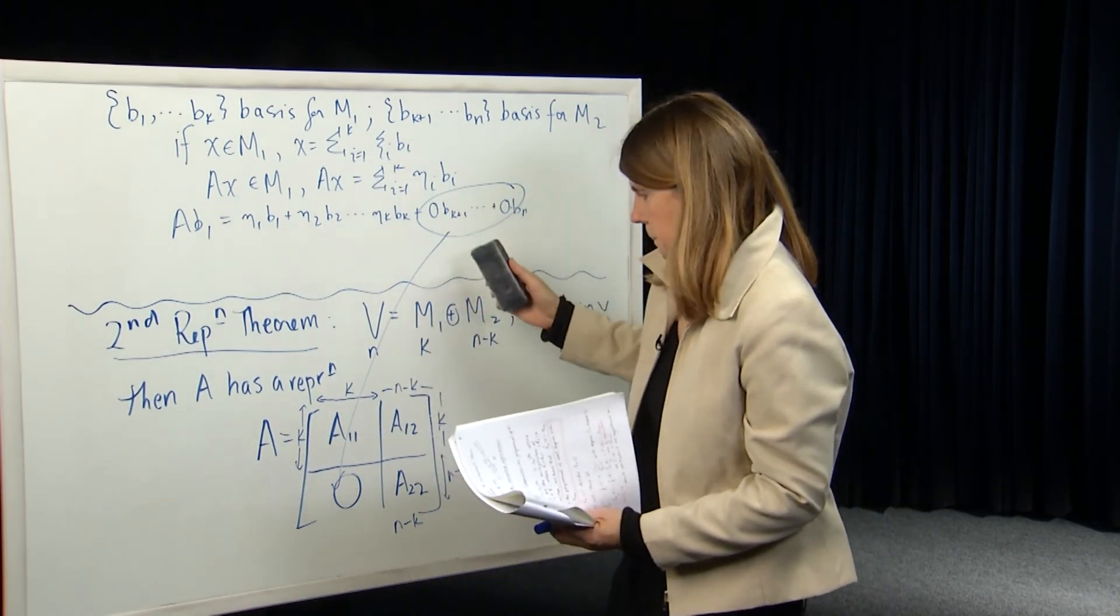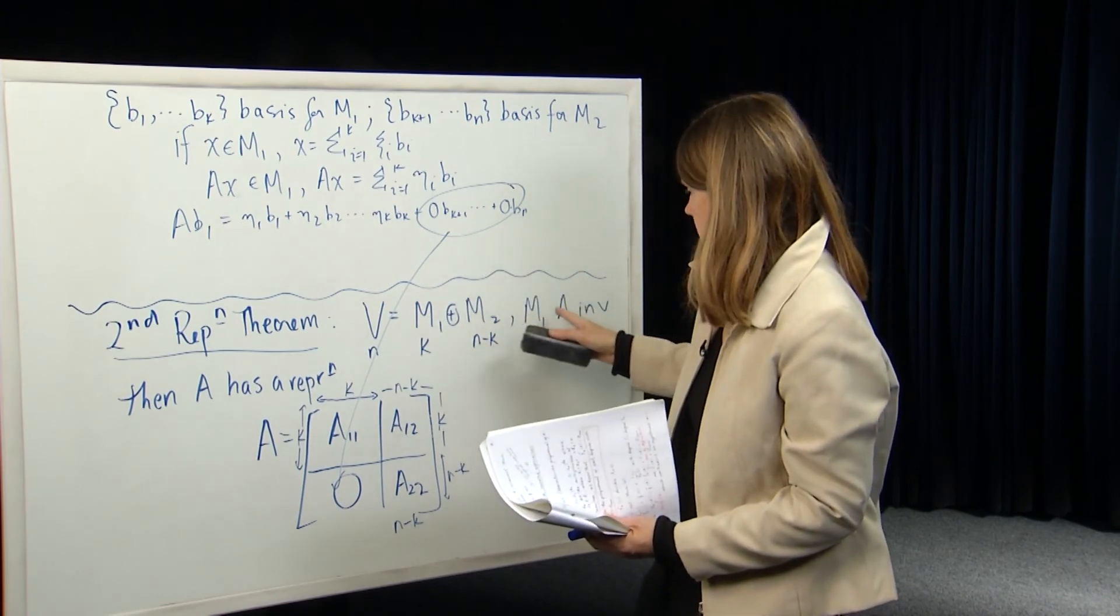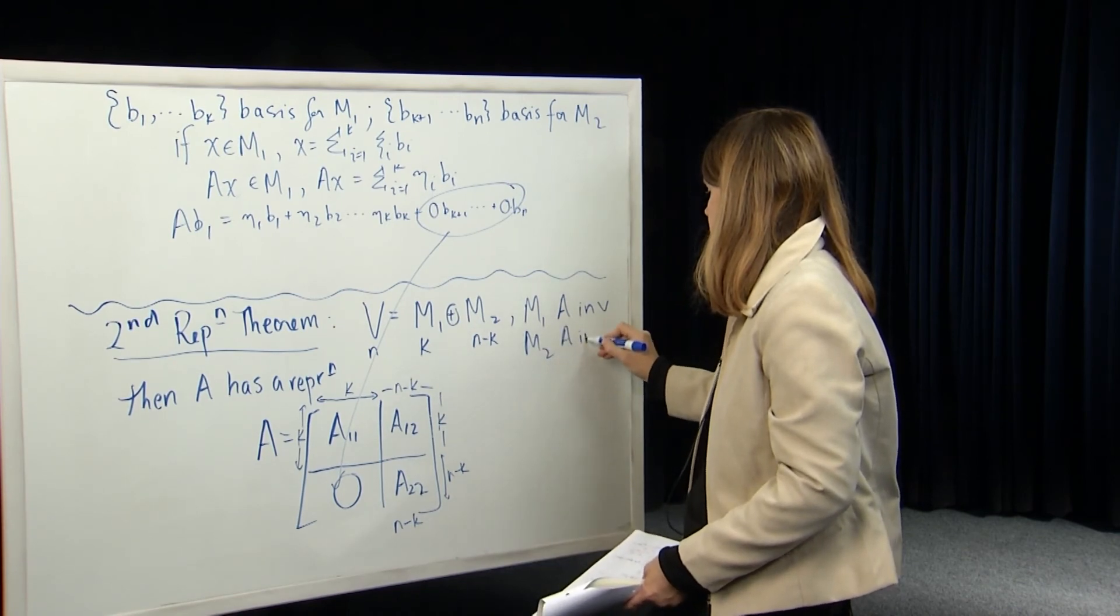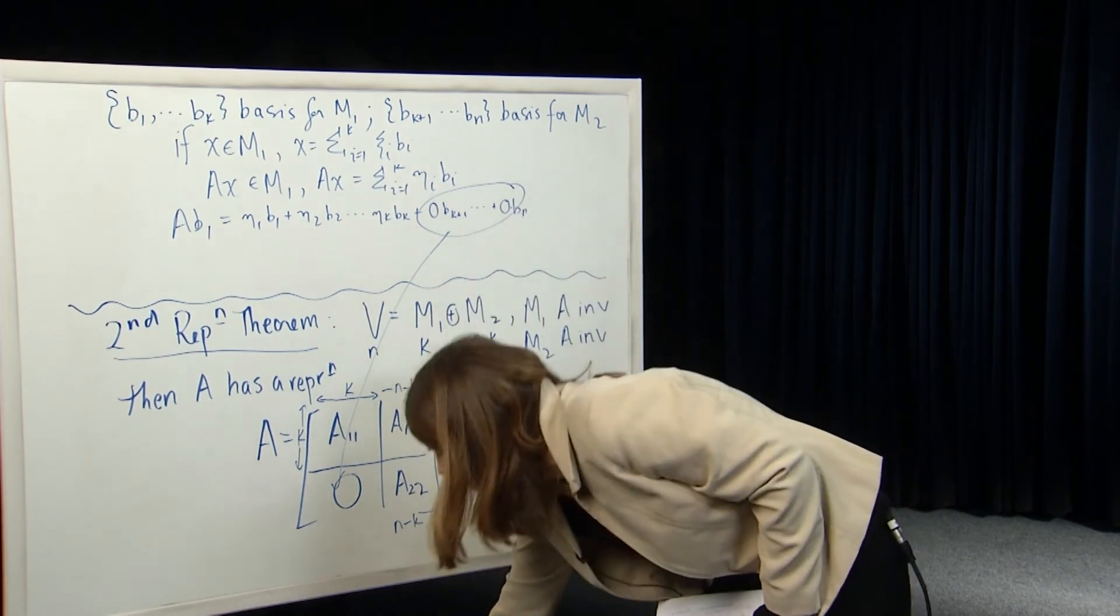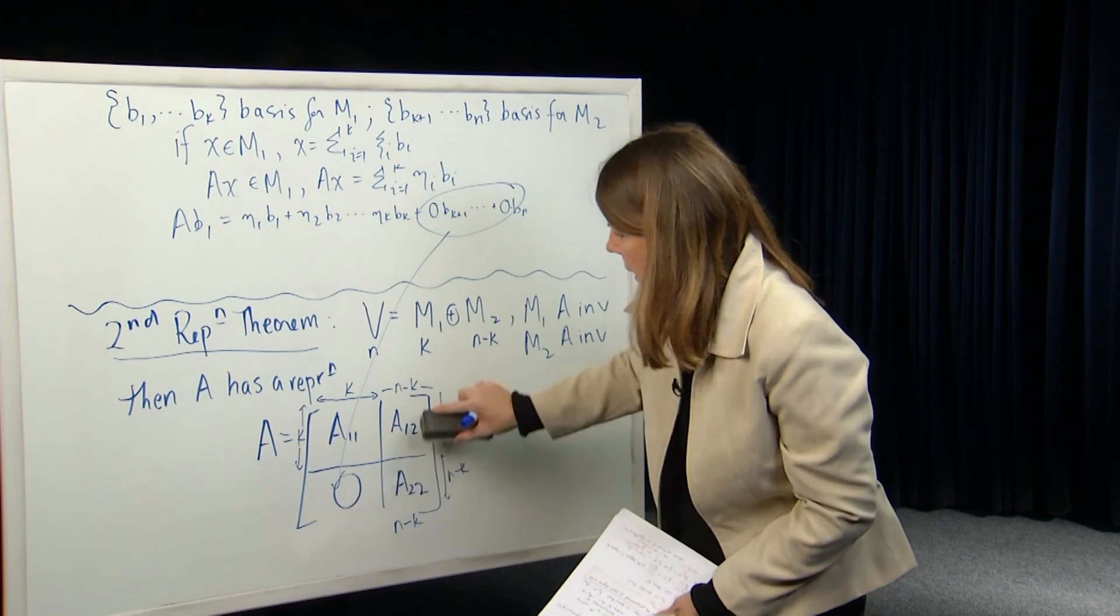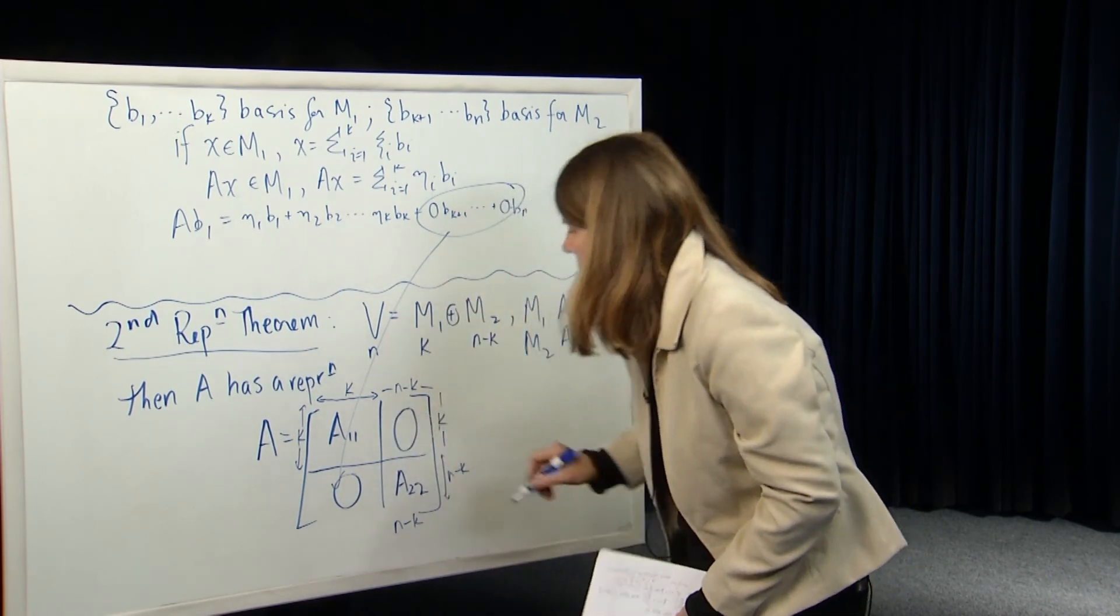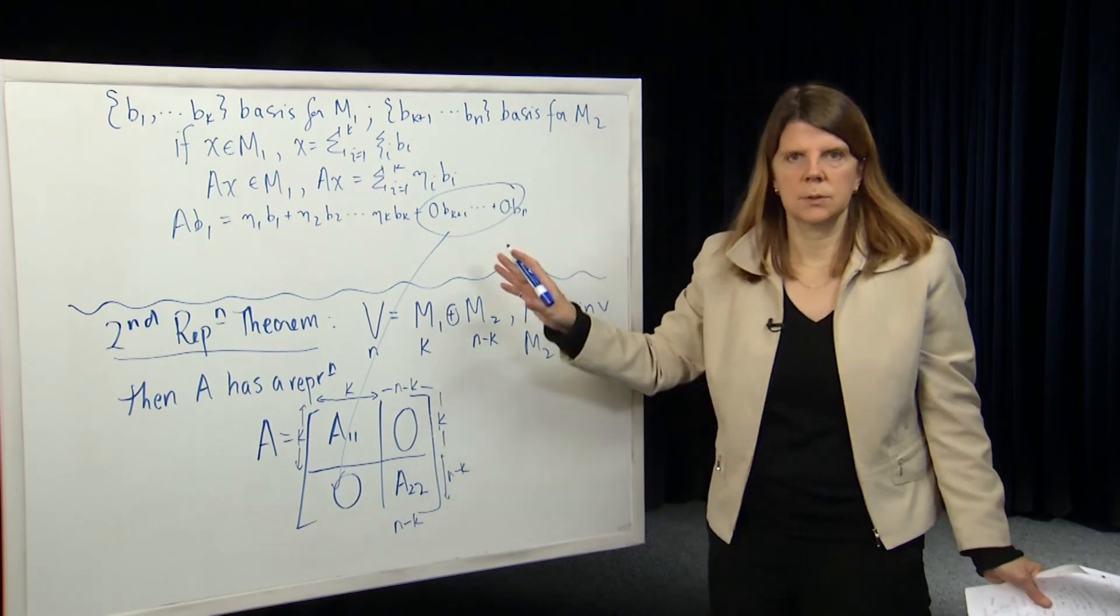If both of them are A invariant, so if both M1 and M2 are A invariant, then, let's actually just edit this. So now M2 is A invariant. Then A has a representation where not only do we have a 0 here, but we end up with a 0 over here too. And the proof is exactly the same as the one we've just done.